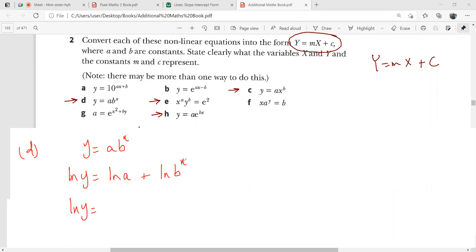ln y equals, let me write this first. This is x ln b plus ln a. And further I can write it as ln b in brackets x, and then this is your ln a. So that means your y is going to be ln y. X remains x this time. And the gradient is going to be ln b and the intercept is going to be ln a.